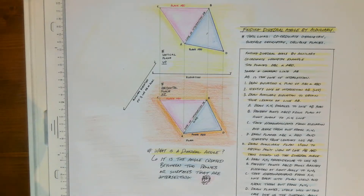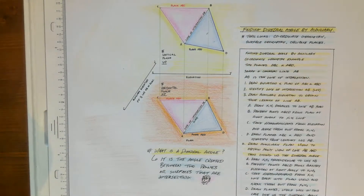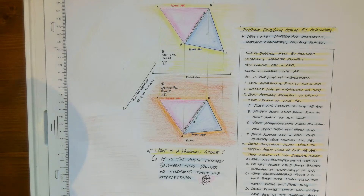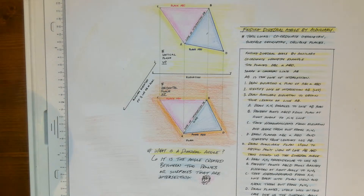Good morning lads. This morning I'm going to go through the dihedral angle by auxiliary. Dihedral angle is a very common term in DCG. If we have a quick look, I've listed the topics that dihedral angle is typically linked to: coordinate geometry, surface geometry, and oblique planes. It could come up in other areas in an exam as well, but what we're doing today will apply to at least three topics.